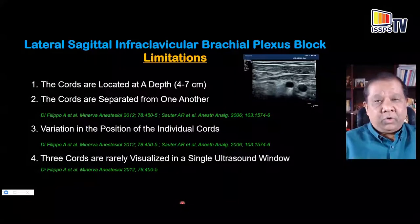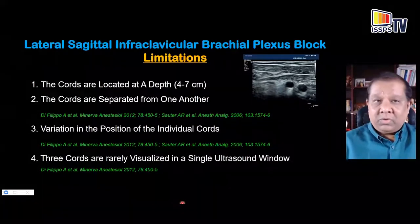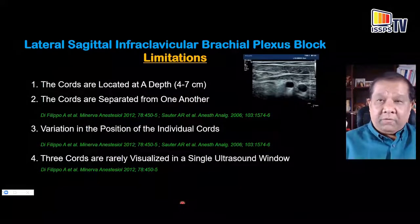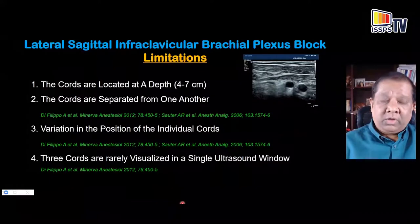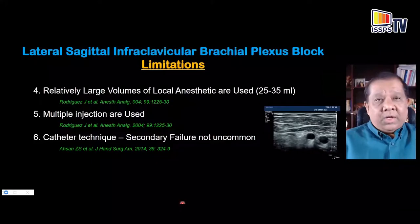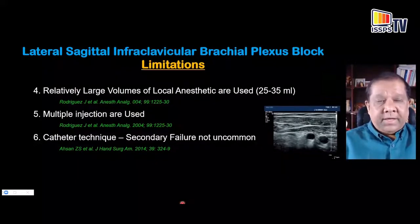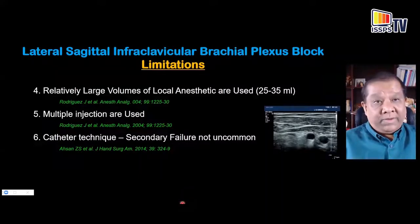With dynamic scanning proximally and distally and familiarity with cord anatomy, you can track individual cords and confirm their identity. However, because three cords are rarely visible in a single sagittal window, and because cords are separated from one another with wide positional variation, relatively large volumes of local anesthetic are used to compensate — hoping the volume will spread to all cords and produce blockade. Multiple injections have also been shown to be more effective than a single injection.